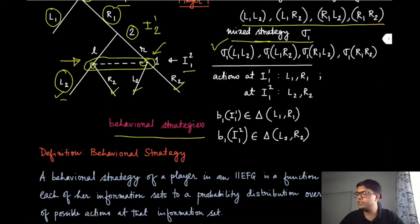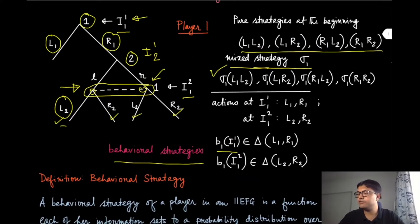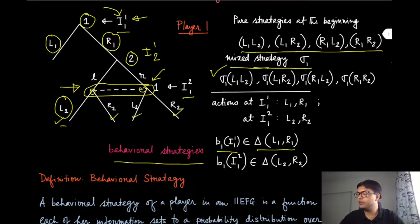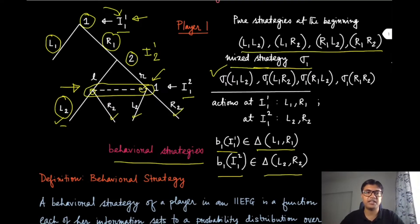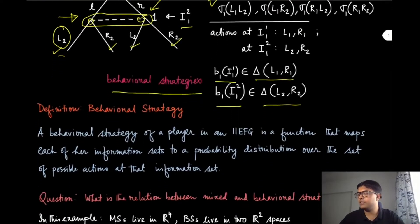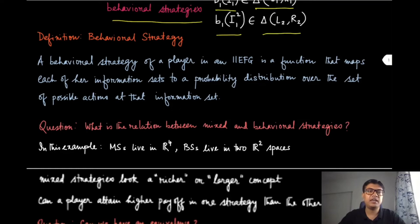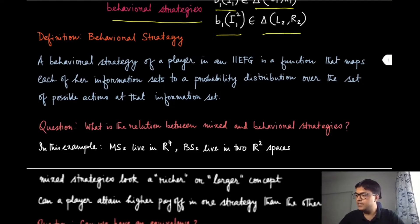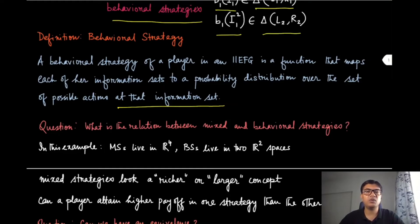How can we formally define a behavioral strategy? Let b1(i11) be the behavioral strategy at the first information set for player one — a probability distribution over l1 and r1. Similarly, b1(i12) is a probability distribution over l2 and r2. Formally, the behavioral strategy of a player in an imperfect information EFG is a function that maps each of her information sets to a probability distribution over the set of possible actions in that information set.